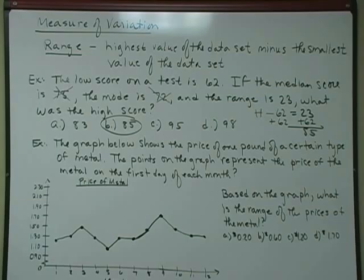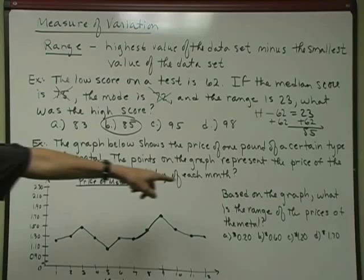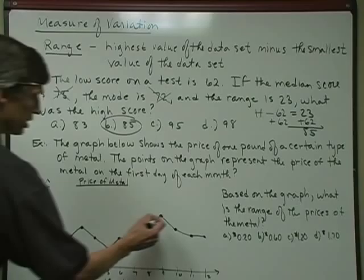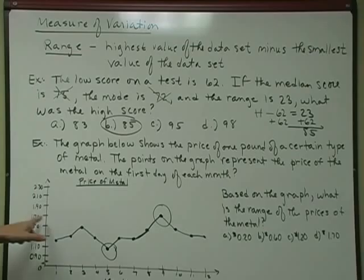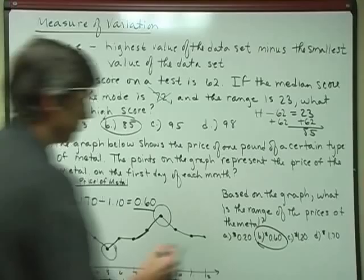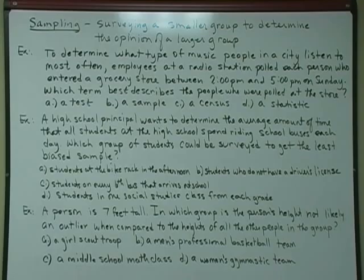The next example uses a line graph that I've drawn out down here. It says the graph below shows the price of one pound of a certain type of metal. The points on the graph represent the price of the metal on the first day of each month, so first month, second month, third month, all the way to the 12th month, so it's over a year. You'll notice this little squiggly right there, and that means that it goes from 0 up to 90, and this is to represent that we kind of skipped all the numbers in between and jumped right to 90 where all the action's at, all the way up to 230 here. These are the prices, and I'm assuming that's in dollars. Now, the question says, based on the graph, what is the range of the price, the prices of the metal? So the range of the prices is the highest value minus the smallest value. Well, just on observation, this gives me the highest, and this gives me the lowest there. The highest value appears to be $1.70, and the lowest value is $1.10. So that gives me 60 cents for my range, and hopefully that's the choice it is. It's answer B.